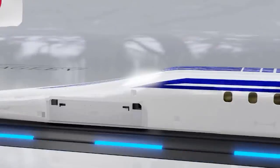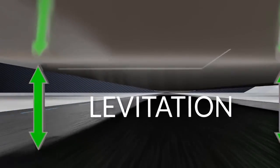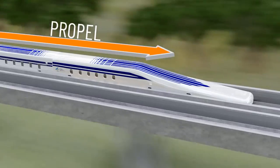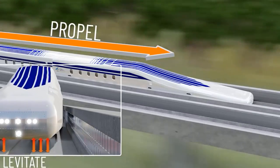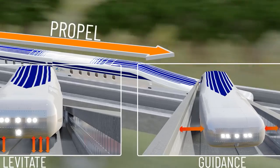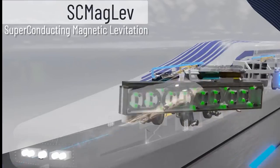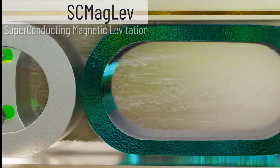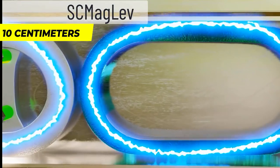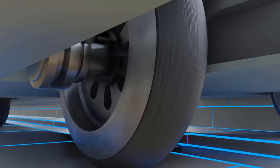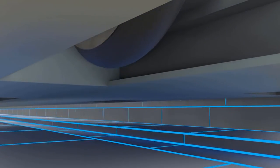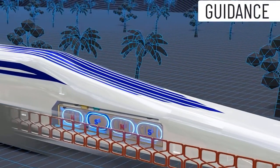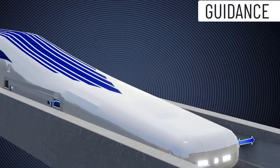MagLev, short for magnetic levitation, is a train transportation system that utilizes two sets of electromagnets. One set repels and lifts the train off the track, while the other set propels it forward, taking advantage of the absence of friction. These trains hover at an approximate height of 10 centimeters, which is approximately four inches above the track. The term MagLev encompasses both trains themselves and the dedicated railway system designed for magnetic levitation and propulsion.